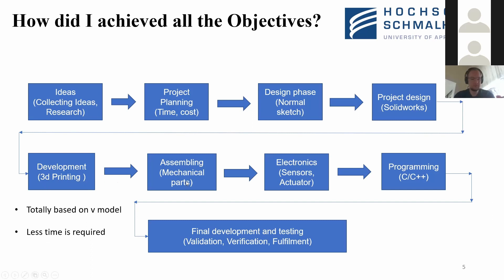Third, I did the assembling of mechanical parts using the university workshop lab, where I fitted my 3D-printed product onto a wood base plate. Then I moved to the electronics lab, where I installed all the sensors, actuators, and wires into the model. After that, I wrote the Arduino C++ programming in the Arduino IDE software, and finally I achieved validation, verification, and fulfillment — testing that all devices and sensors were working correctly.